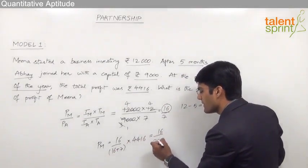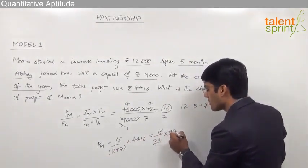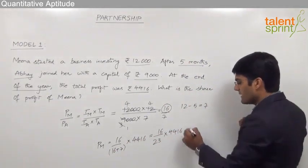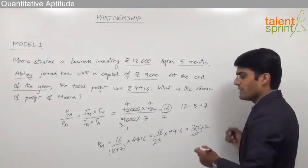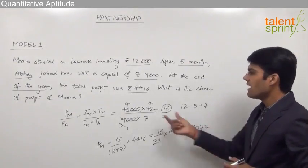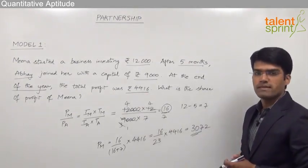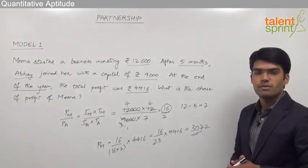Multiplied by the total profit of 4,416. This comes out to be 16 out of 23 into 4, 4, 1, 6. By simplifying this we get the answer as 3, 0, 7, 2. We can say that the profit of Meena out of 4,416 should be 3,072 rupees.